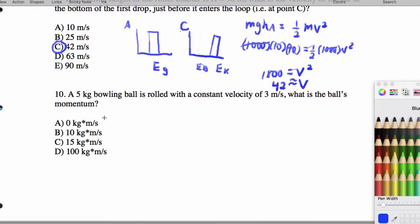Now for number 10: a 5 kilogram ball rolled with a velocity of 3 meters per second, what's the ball's momentum? So momentum is mass times velocity. That's going to be 5 times 3, which winds up being 15 kilograms meters per second. So that's the answer to number 10, which is C.